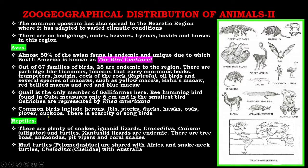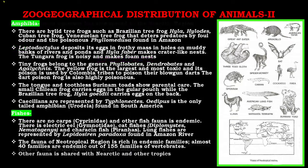Common birds include herons, ibis, storks, ducks, hawks, owls, flickers, and cuckoos. There is a scarcity of songbirds. Reptiles include plenty of snakes, iguanine lizards, crocodiles, caiman, alligators, and turtles. There are tree boas, anacondas, pit vipers, and coral snakes. Turtles of family Pelomedusidae are shared with Africa, and snake-necked turtles of family Chelidae are shared with Australia.